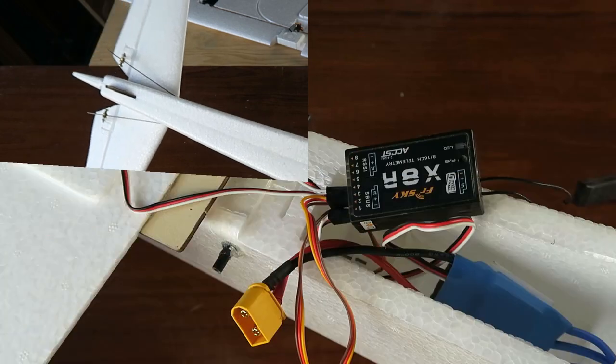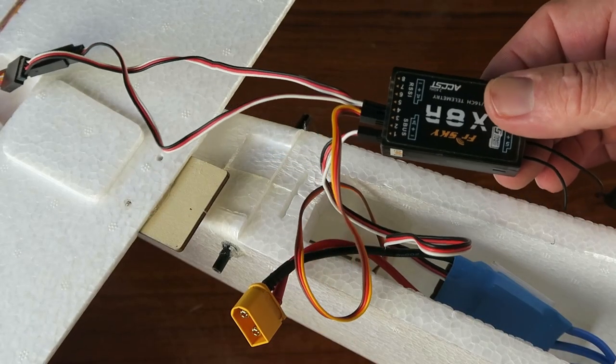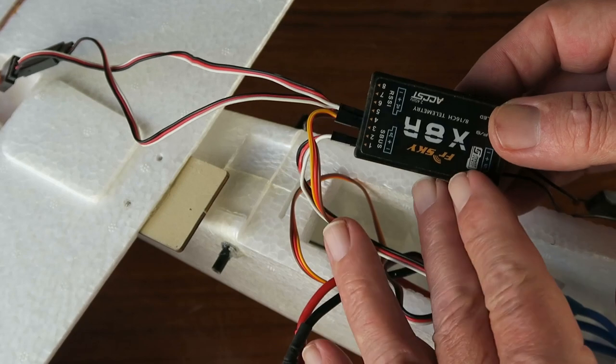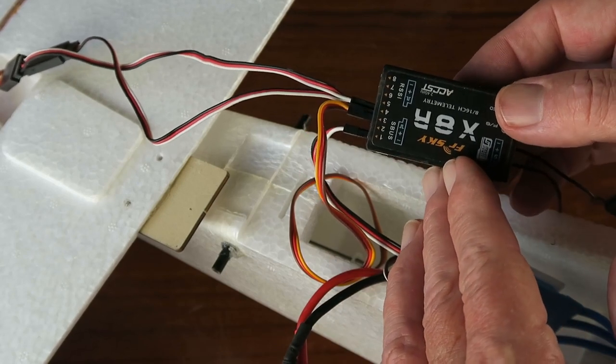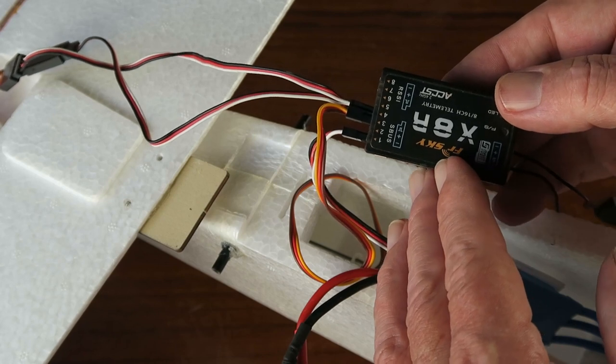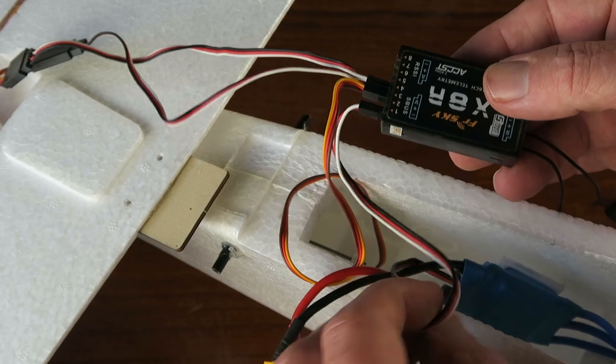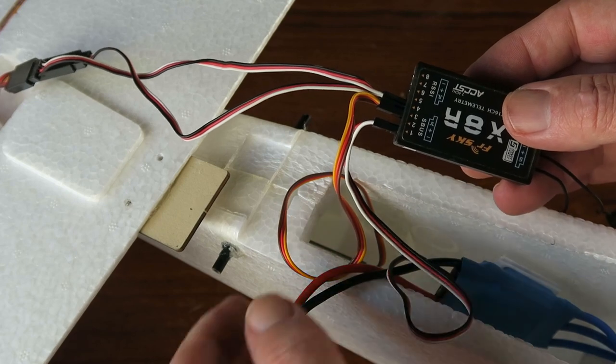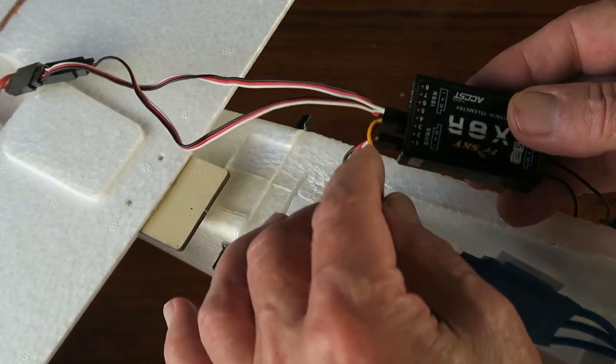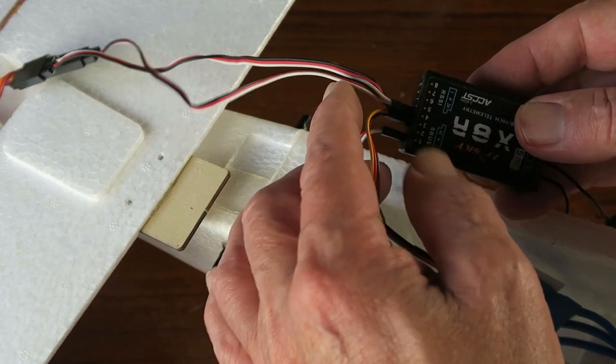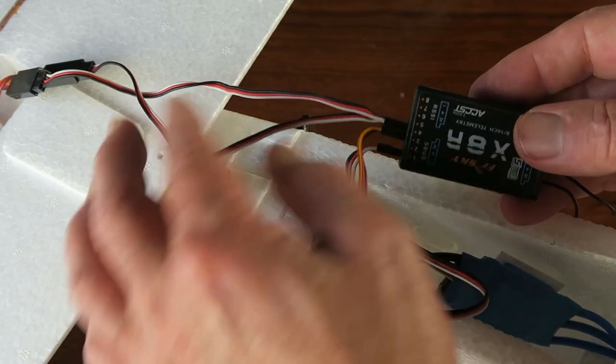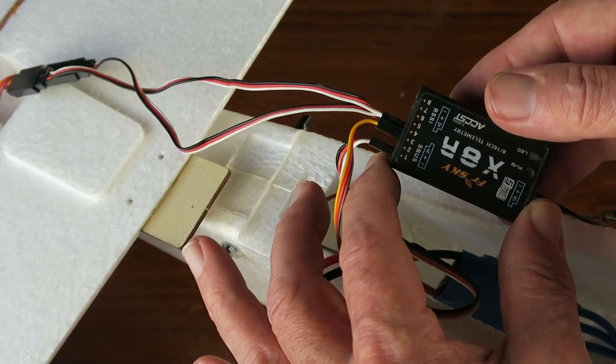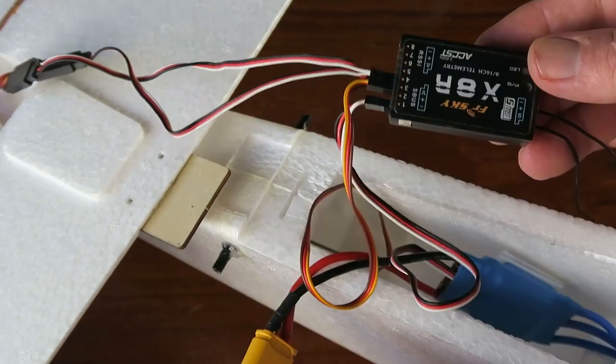Turning our attention now to the radio installation and the general electrics, there's not very much to do. This receiver is pretty much overkill for this job but it happens to be the one that came with my transmitter. Channel one is connected to the throttle, channel three on my radio setup is the elevator control, and channel four is split with this Y harness which is supplied to the two servos controlling the ailerons. It would be possible to use just a three-channel receiver with this model.